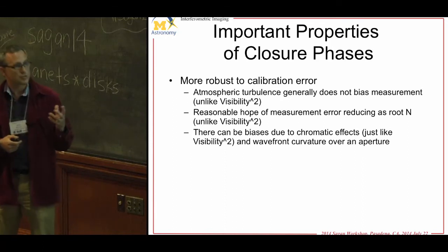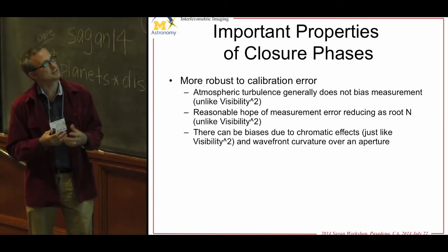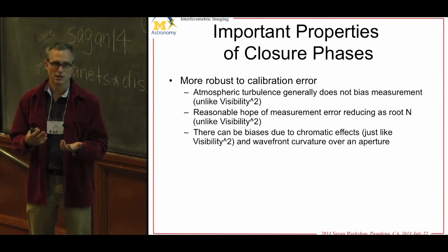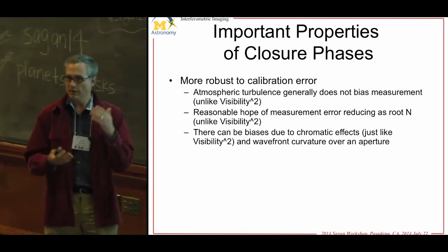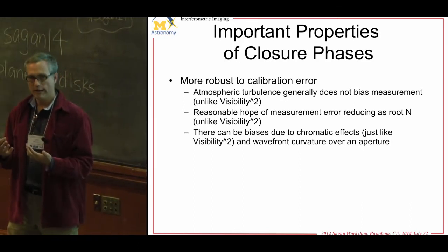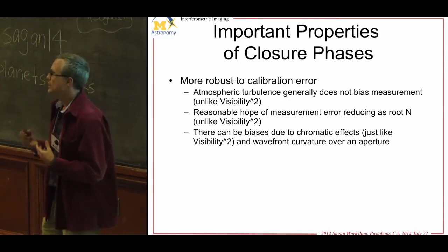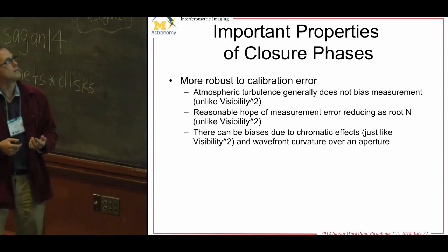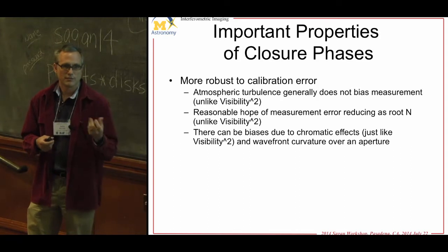From an instrumental point of view, closure phase is great because atmospheric turbulence does not bias it in one direction more than another. When calibrating amplitude, worse or better seeing causes blurring with finite exposure time that must be calibrated. The statistics can be very non-Gaussian, making it very difficult to calibrate amplitude.